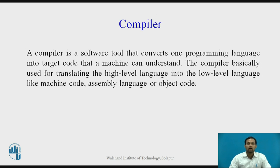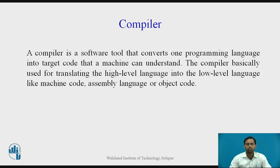Compiler. A compiler is a software tool that converts one programming language into target code that a machine can understand. We write code in Embedded C or assembly language, and the compiler converts it into machine-understandable language. The compiler is basically used for translating high-level language into low-level language such as machine code, assembly language, or object code. These are the software components used while building any embedded system.